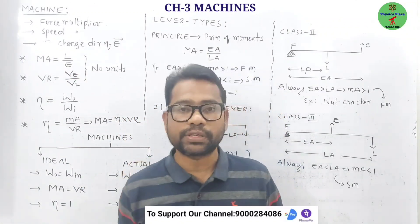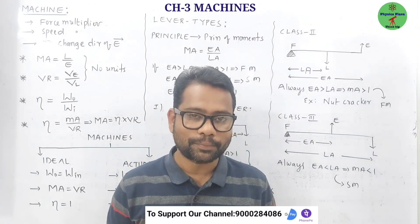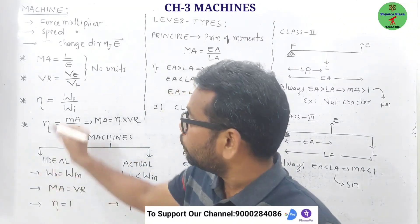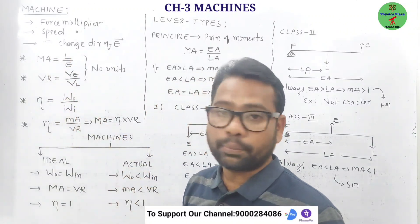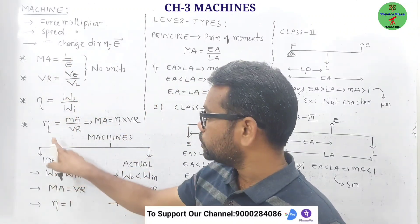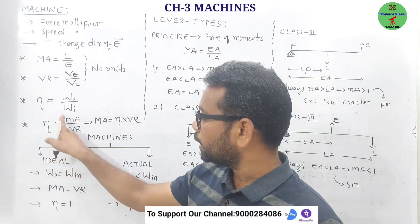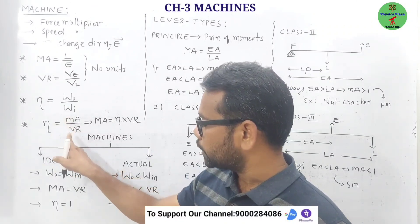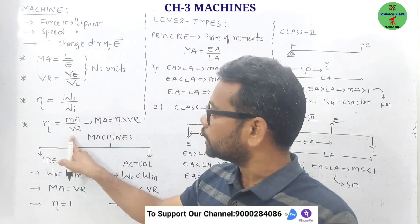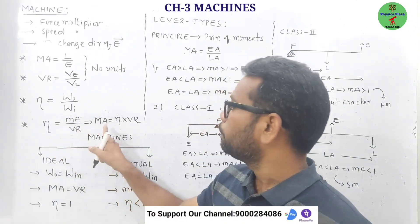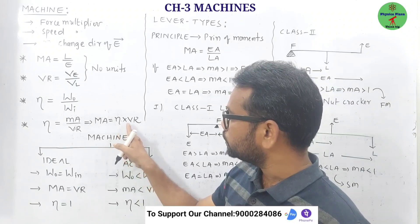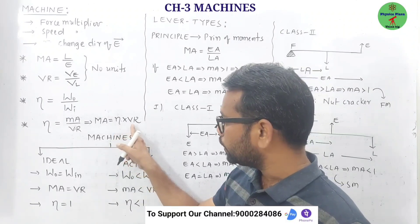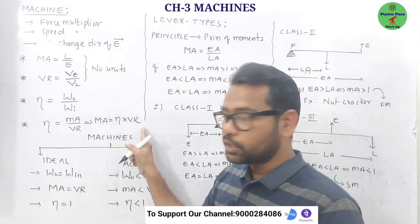Now, how these three are related is very important. Efficiency is equal to mechanical advantage divided by velocity ratio. It can also be written as: mechanical advantage is equal to efficiency multiplied by velocity ratio.